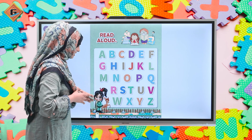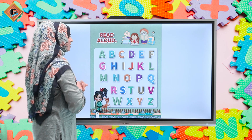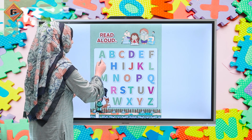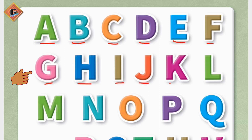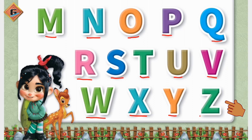Okay students, this is page number 78, which is very easy. This is just what we have to do: read aloud. Alphabets are given — ABC is written and we have to read aloud. A, B, C, D, E, F, G, H, I, J, K, L, M, N, O, P, Q, R, S, T, U, V, W, X, Y, Z — or Zed.